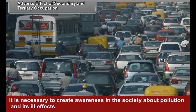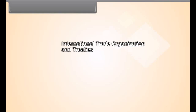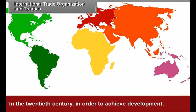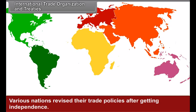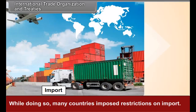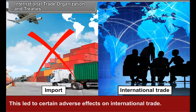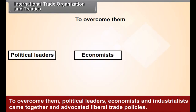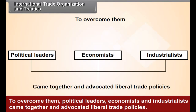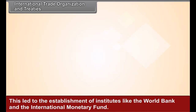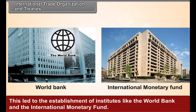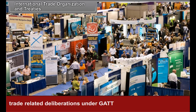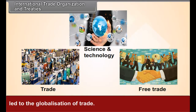International trade organizations and treaties: In the 20th century, in order to achieve development, various nations revised their trade policies after getting independence. While doing so, many countries imposed restrictions on imports, leading to adverse effects on international trade. To overcome them, political leaders, economists and industrialists came together and advocated liberal trade policies. This led to the establishment of institutes like the World Bank and the International Monetary Fund. Progress in science and technology, trade-related deliberations under GATT, and measures taken for free trade led to the globalization of trade.